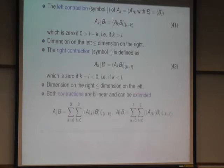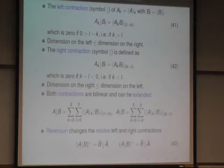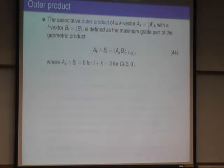So both contractions, which are given here only for single blades, can be generalized to multivectors by linearity. So they are linear in both factors. This is double sums. And the reversion changes the order, and it also changes the left contraction into the right contraction and the other way around.